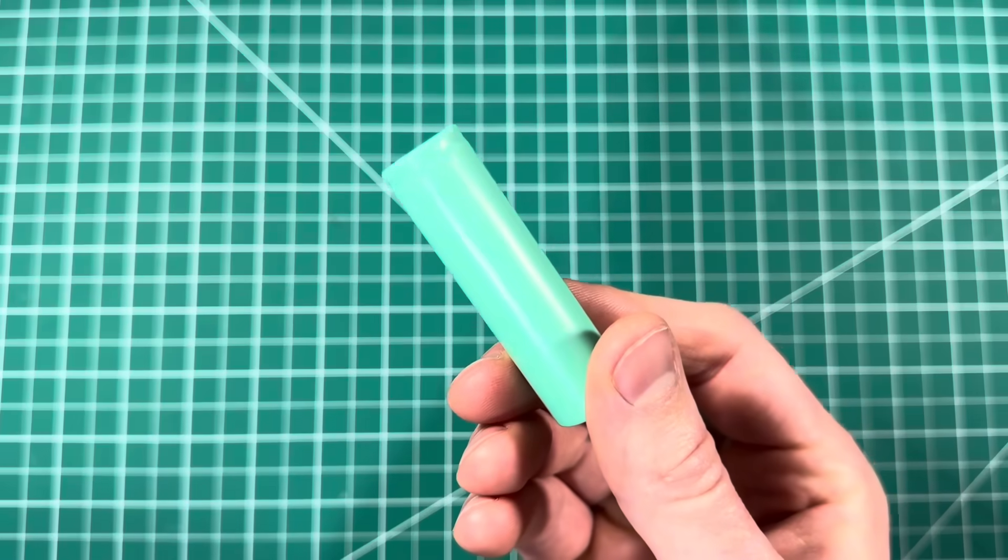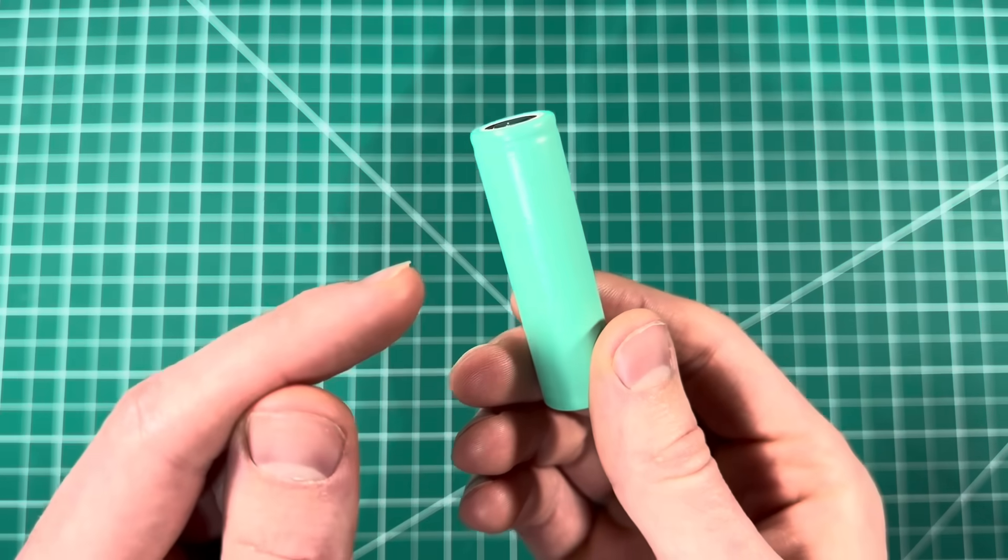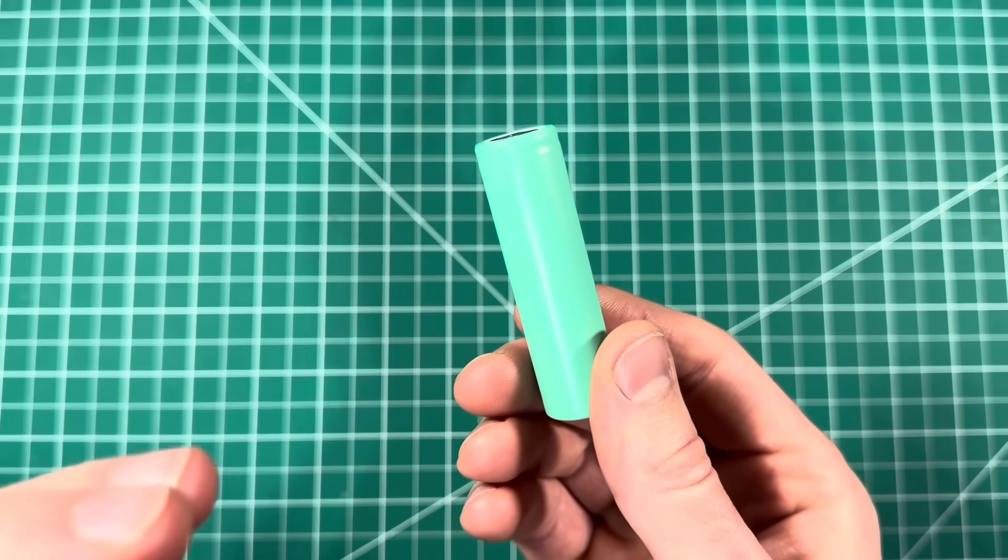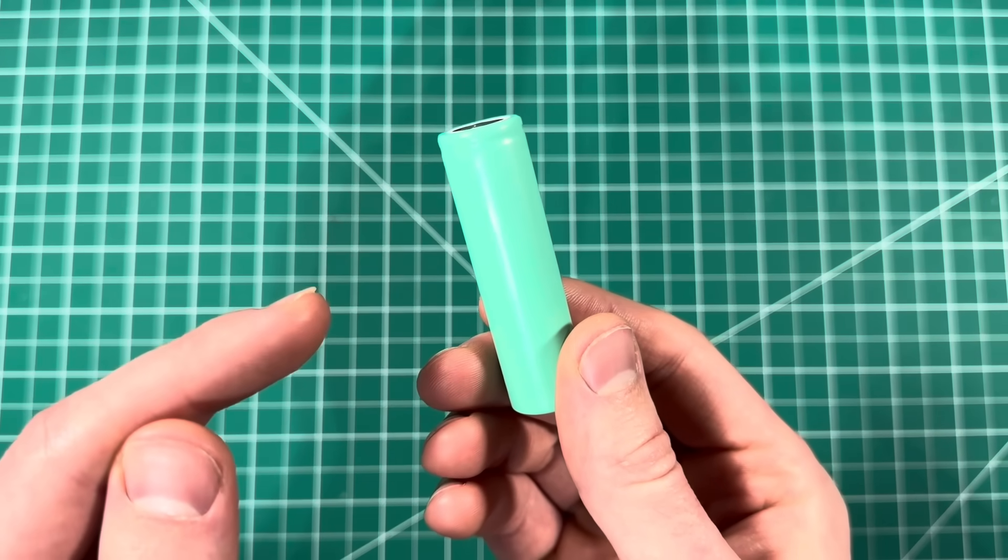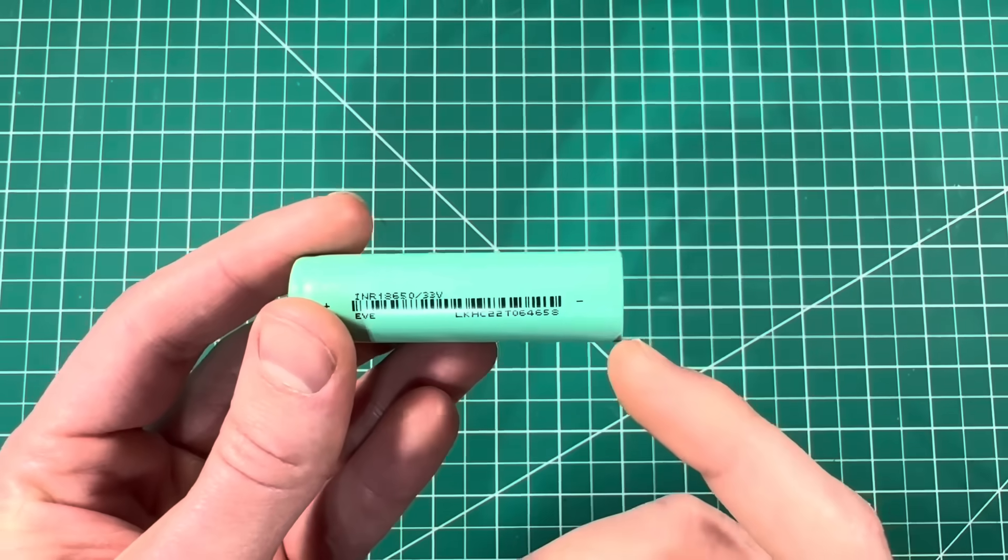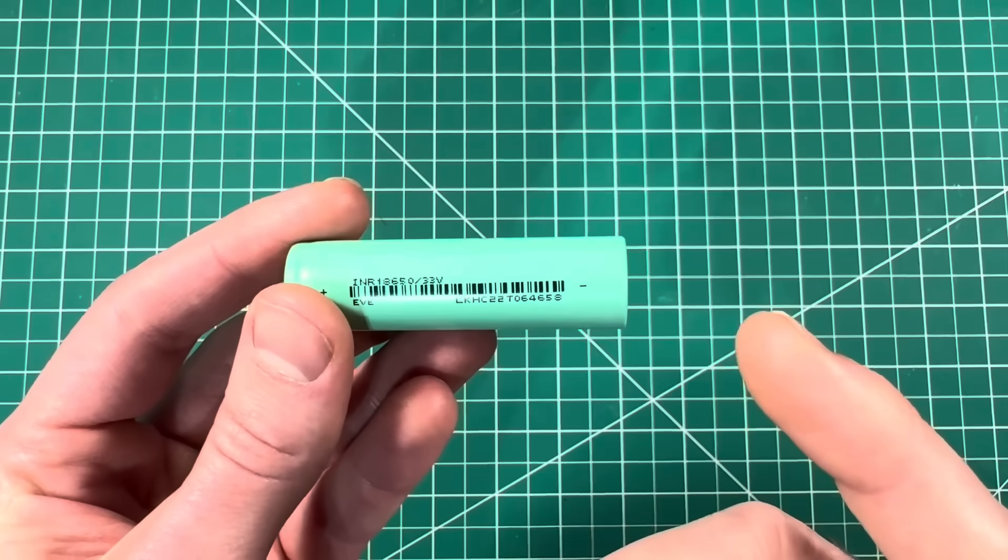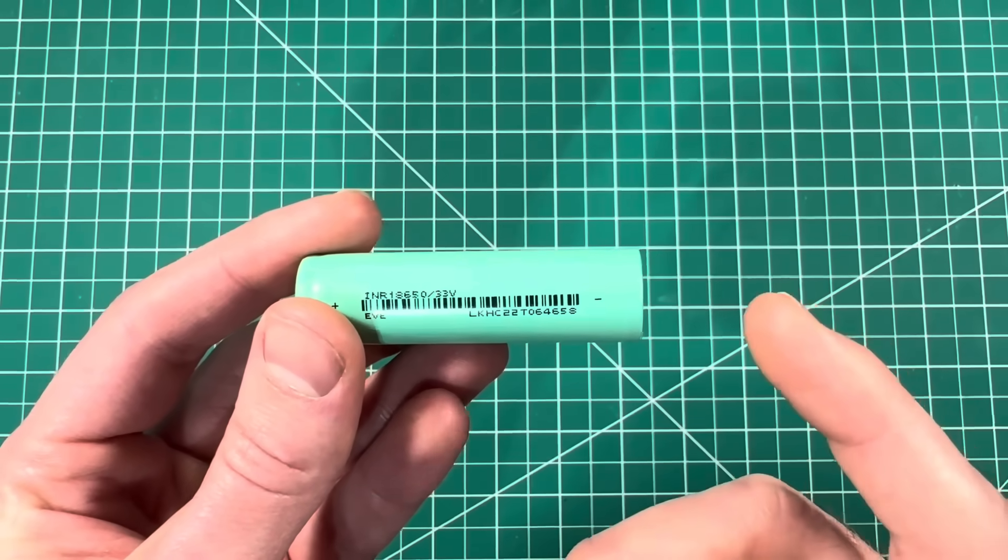You're going to need a lithium ion cell. You're going to want one with a high discharge rating, just meaning it can put out a lot of power and that is going to help us with the extra weight. An easy rule of thumb for decent flight performance is at least 20 amps of discharge rate. The higher, the better.